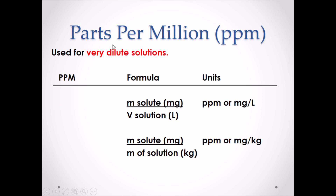Parts per million is a concentration value used for very dilute solutions. It can have two formulas depending on the units given. The first is mass of solute in milligrams divided by volume of solution in liters — units are mg/L, also expressed as ppm. The second formula is mass of solute in milligrams divided by mass of solution in kilograms — units are mg/kg, also expressed as ppm.